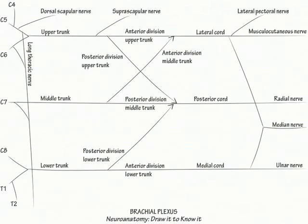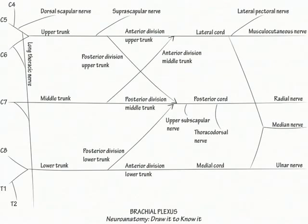Then draw three branches, from proximal to distal, off the posterior cord: the upper subscapular, thoracodorsal, and lower subscapular nerves, which innervate the subscapularis, latissimus dorsi, and teres major muscles, respectively.